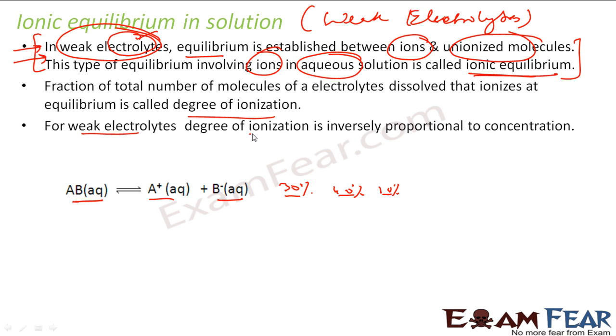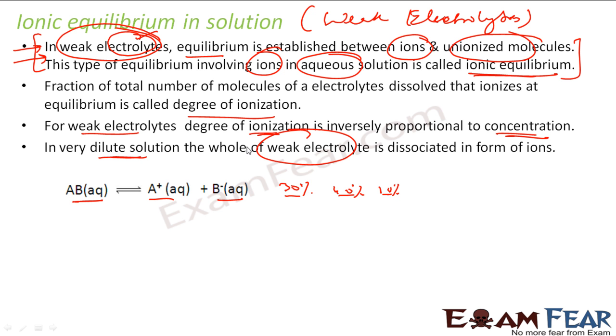For a weak electrolyte, the degree of ionization is inversely proportional to the concentration. Why is this so? Because in a very dilute solution, the whole of the weak electrolyte will dissociate in the form of ions. If it is very weak and very dilute, then it will dissociate more.